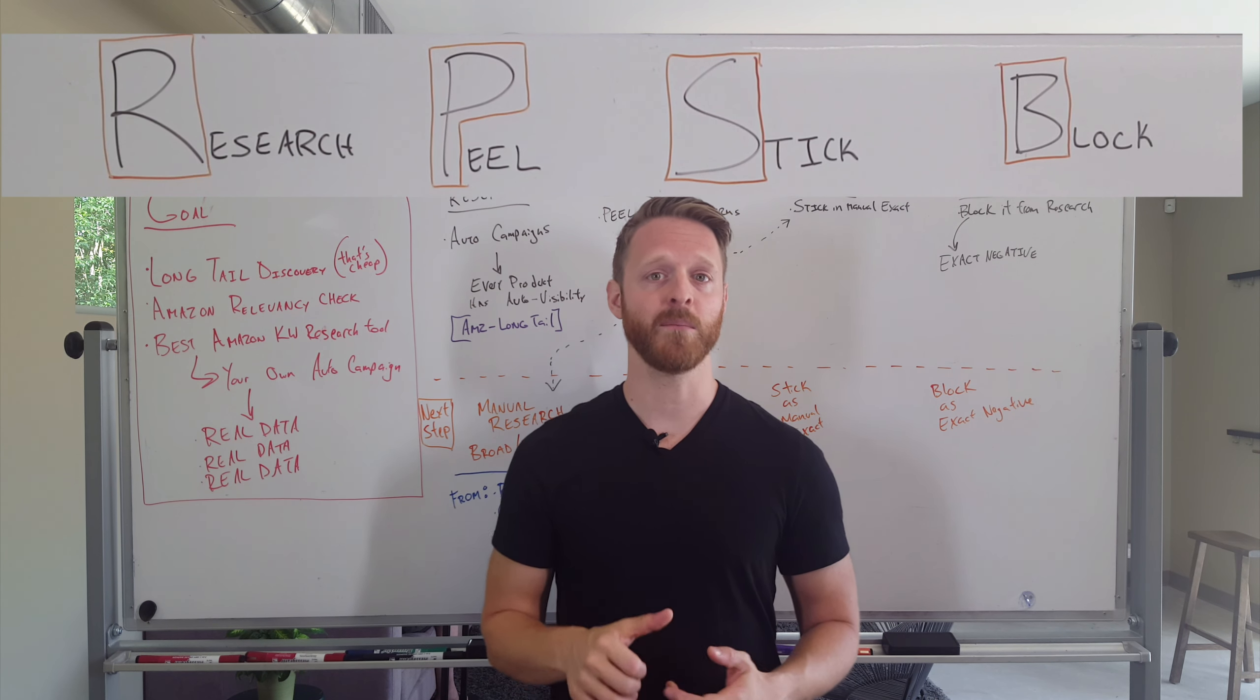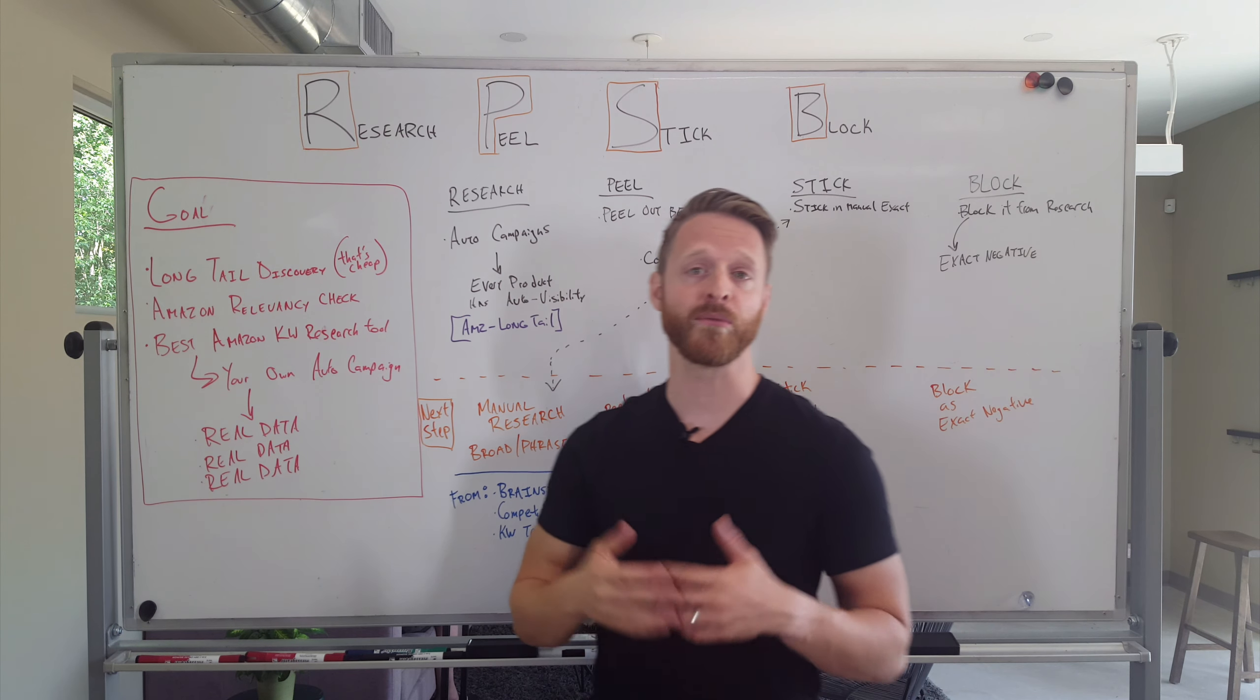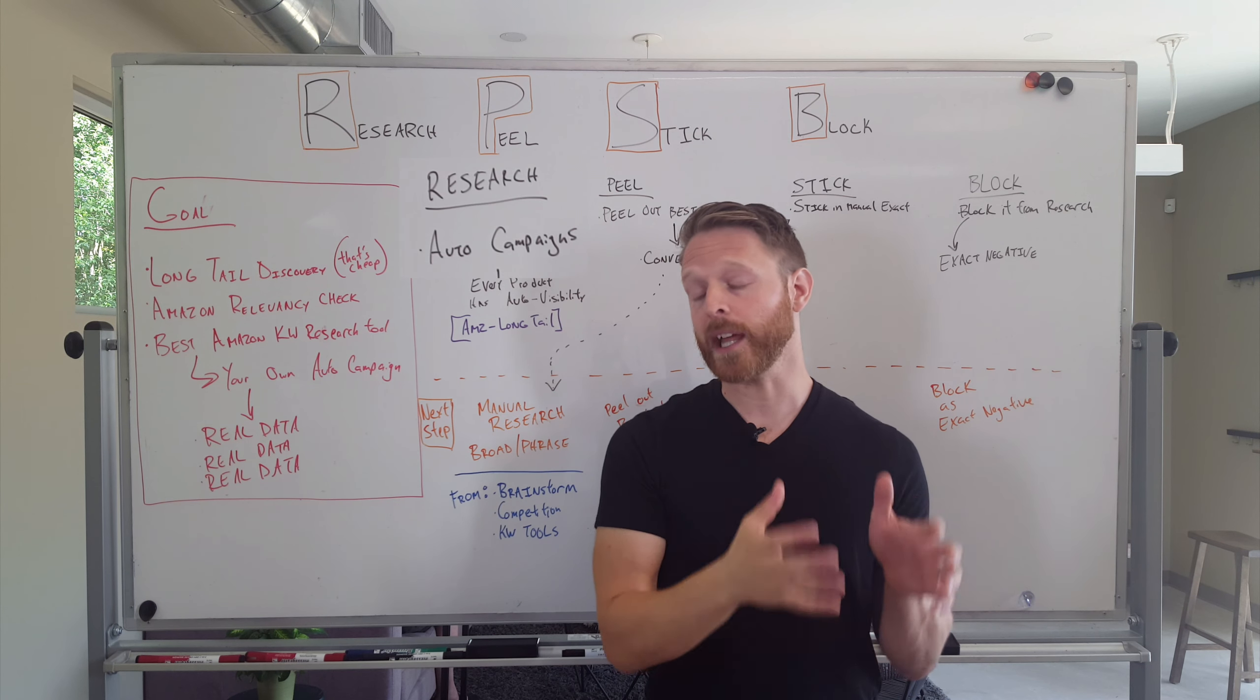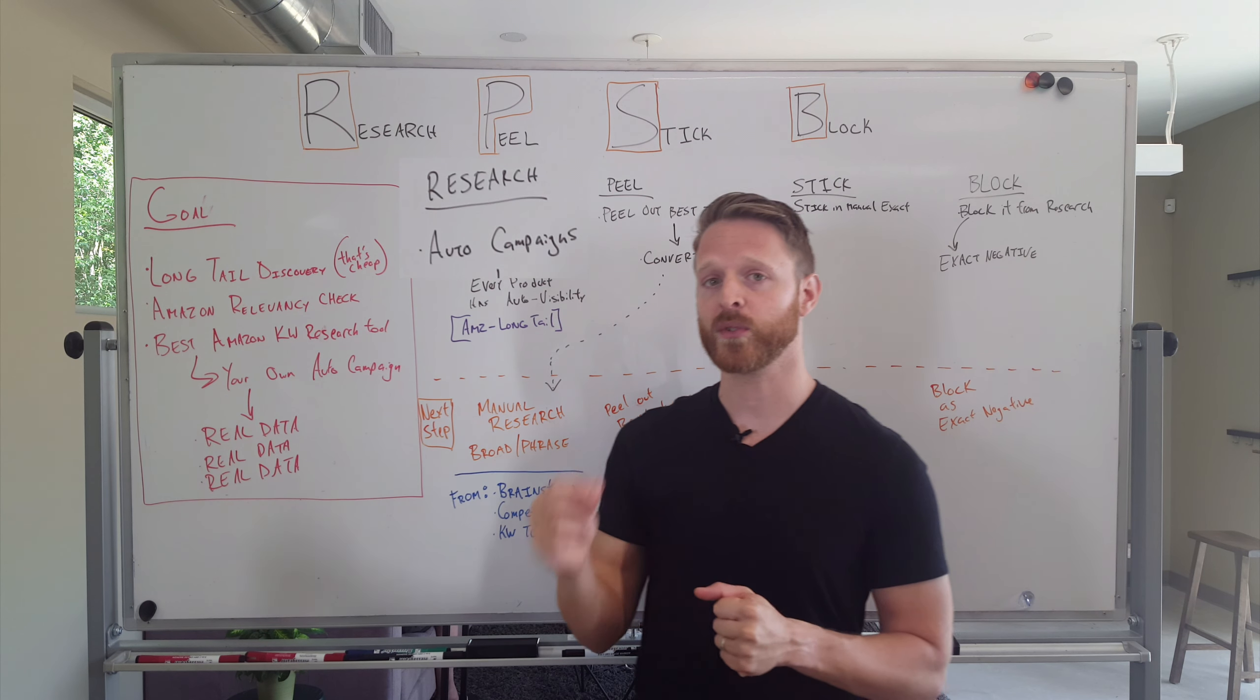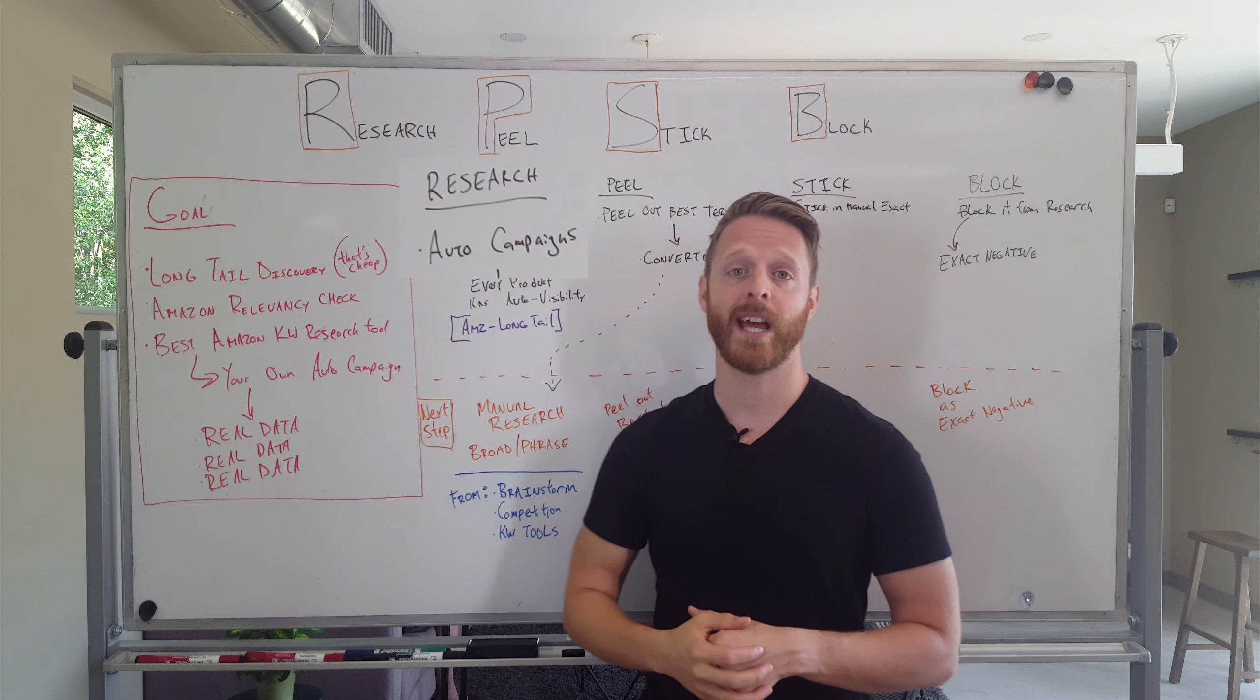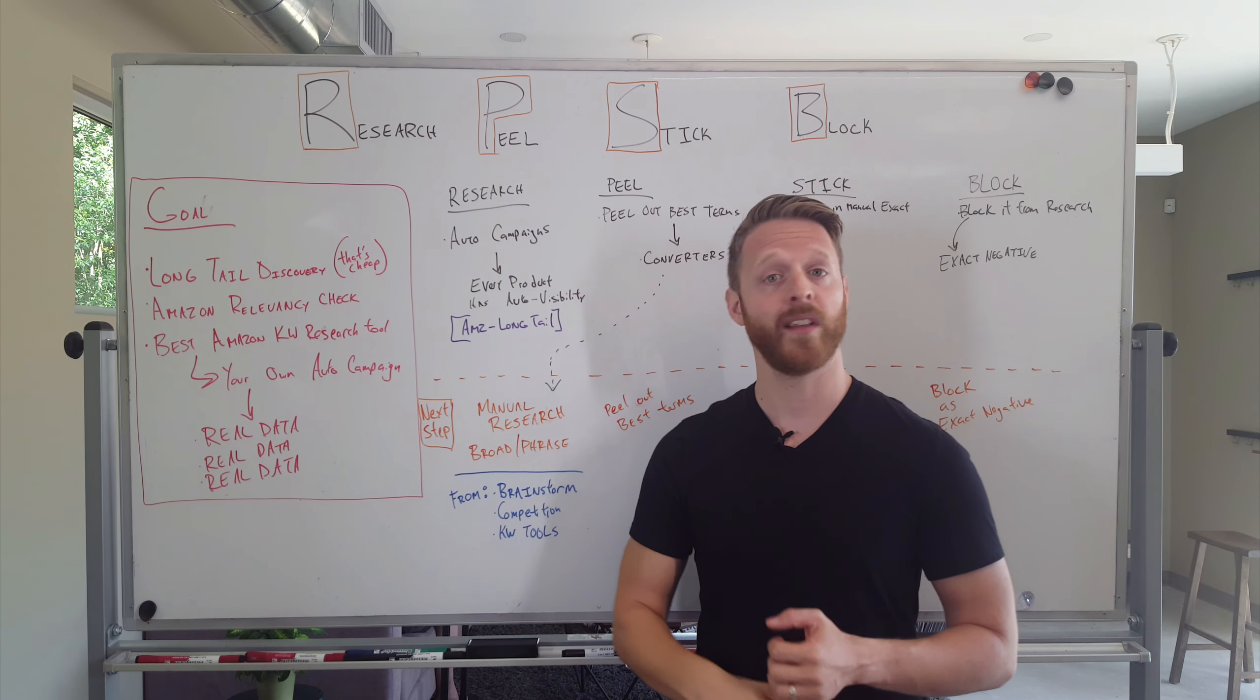So the way that Research, Peel, Stick, and Block works is actually very simple. First things first, we start with research. We want Amazon to go out there and basically display our product for terms that it believes is relevant. So every product in your Amazon store should have an automatic campaign for visibility. This is going to allow us to tap into all of these really long tail terms.